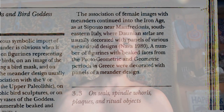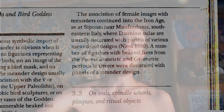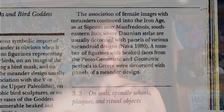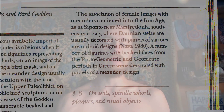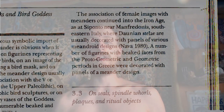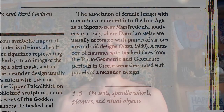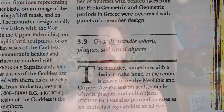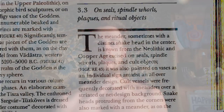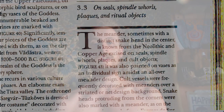The association of female images with meanders continued into the Iron Age. At Siponto near Manfredonia, southeastern Italy, Daunian stelae are usually decorated with panels of various meandroid designs. A number of figurines with beaked faces from proto-geometric and geometric periods in Greece were also decorated with panels of a meander design. Section 3.3: seals, spindle whorls, plaques, and ritual objects.